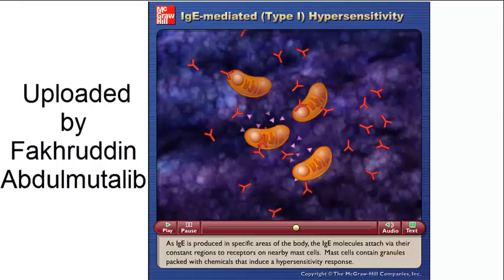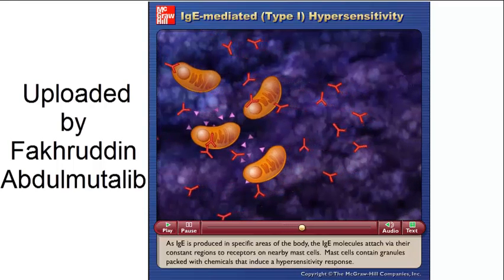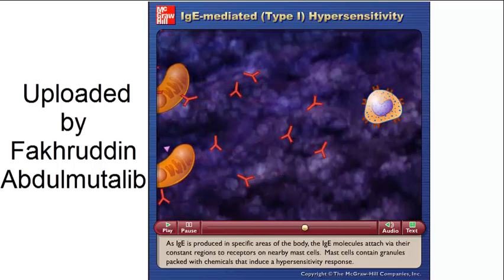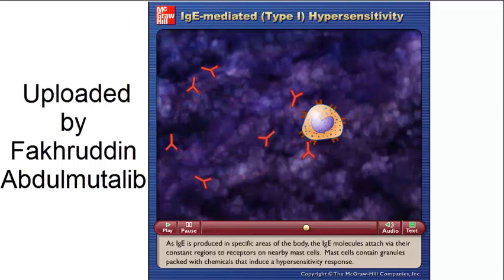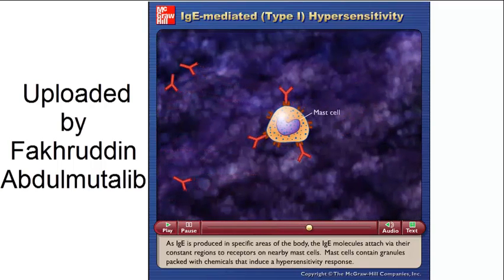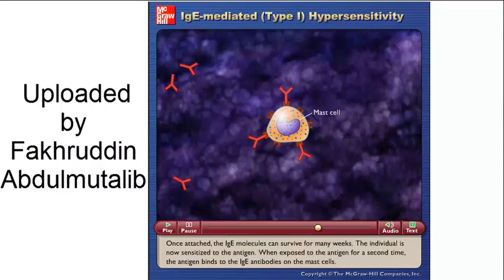As IgE is produced in specific areas of the body, the IgE molecules attach via their constant regions to receptors on nearby mast cells. Mast cells contain granules packed with chemicals that induce a hypersensitivity response. Once attached, the IgE molecules can survive for many weeks. The individual is now sensitized to the antigen.